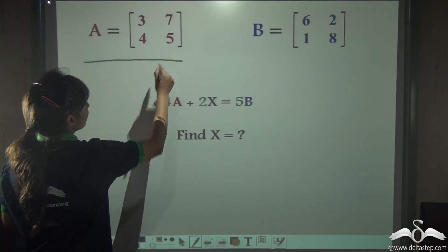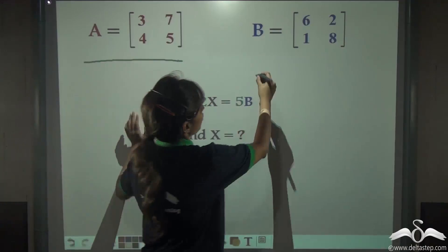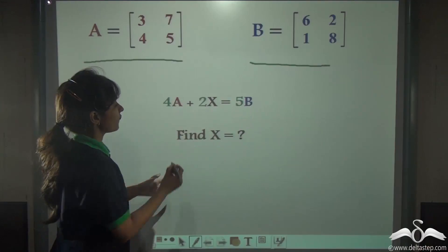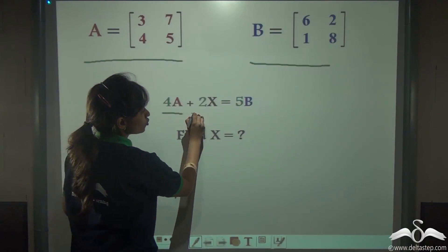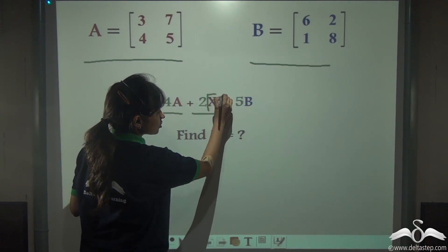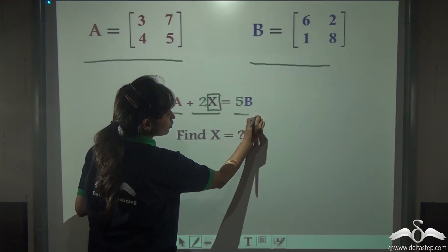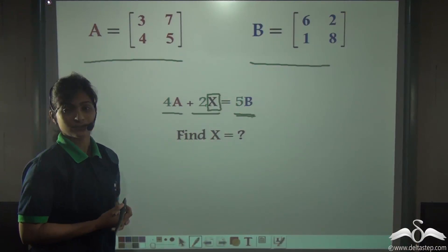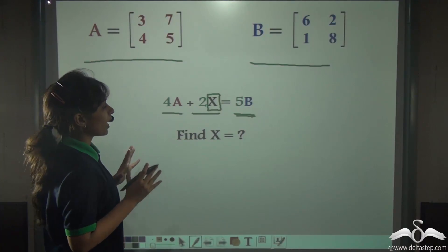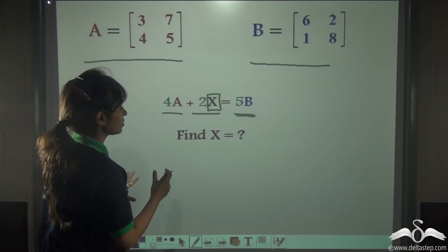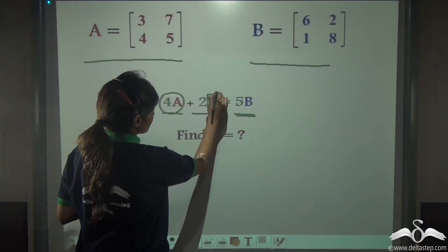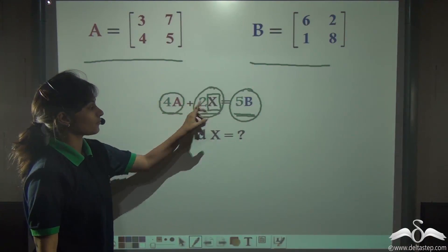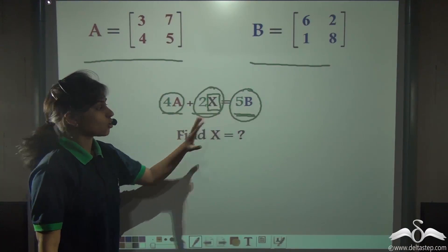Now we will perform some difficult operations using this property of matrices. Here we have been given a matrix A and also a matrix B. Now you have been given an equation where 4A plus 2X, X here is also a matrix, is equal to 5B. Can you find out the value of X? We have to find out X when A and B are already given.